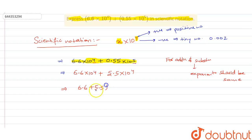We get 6.6 plus 5.5, and outside the bracket will be 10 to the power 4. So on adding we get 12.1 multiplied by 10 to the power 4.